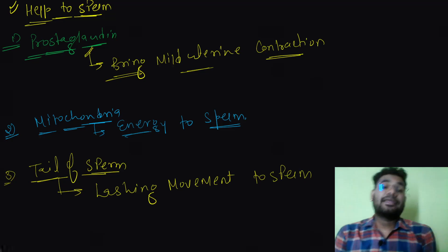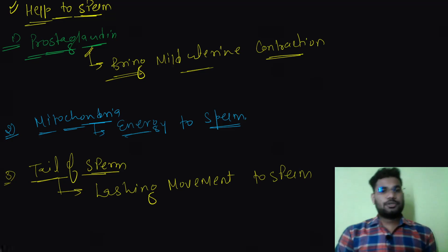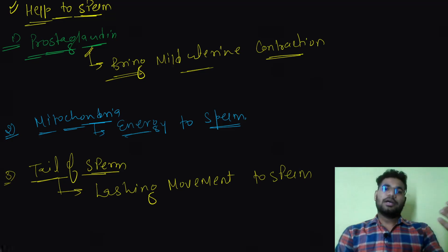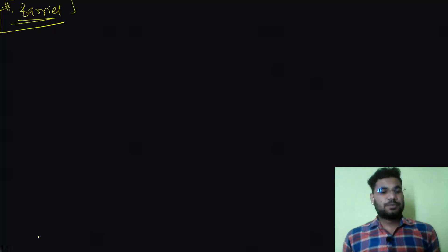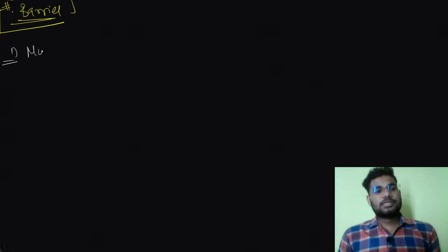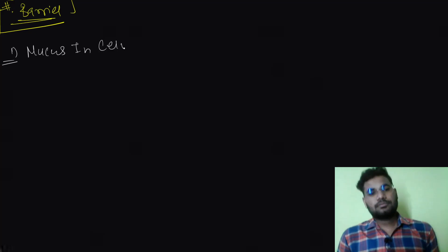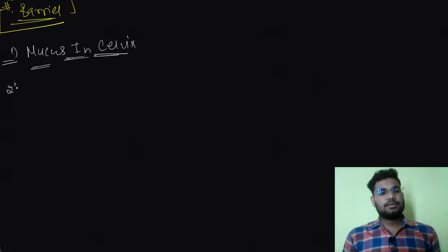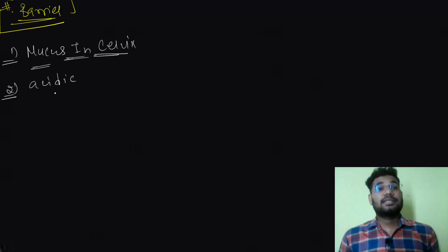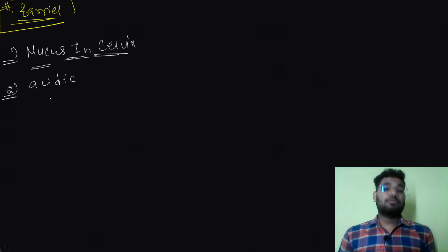Now let's discuss the barriers which prevent sperm from moving up to the fallopian tubes. The first barrier is the mucus in the cervix — there is mucus in the cervix which traps the sperm. Secondly, sometimes the acidic vagina: if the vagina is too acidic, many sperm die right there.